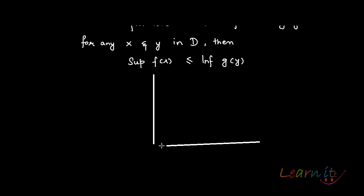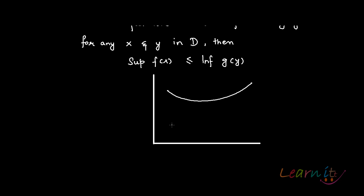And this is your x-axis. Let's try to draw the kind of functions g and f can probably be. They can be functions where g is always greater than f, so f has to be something below g. So this is g and this is f.